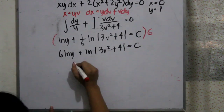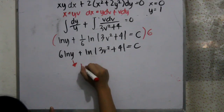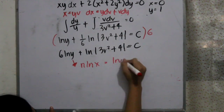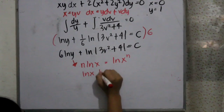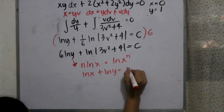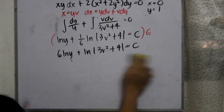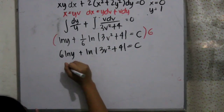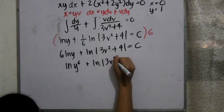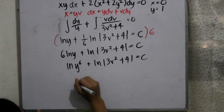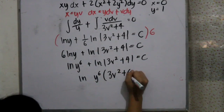We know that the law of natural logarithm states n·ln(x) can be written as ln(x^n), and also that ln(x) plus ln(y) equals ln(x·y). Using these properties, we have ln(y⁶) plus ln(3v² + 4) equals c, which simplifies to ln(y⁶·(3v² + 4)) equals c.